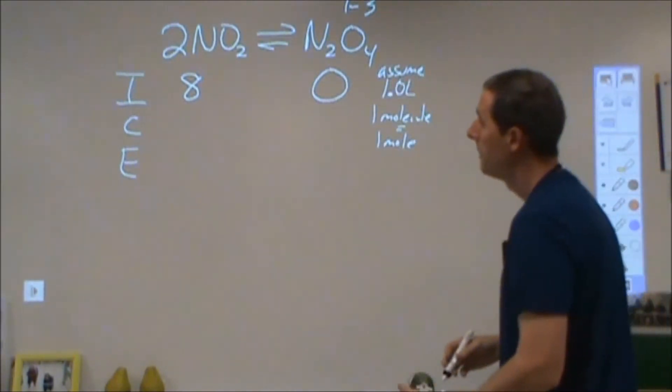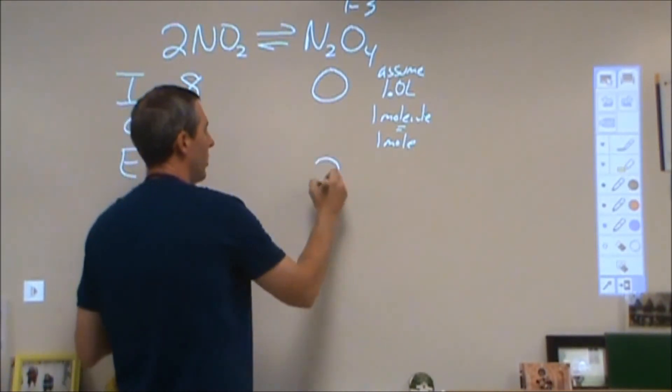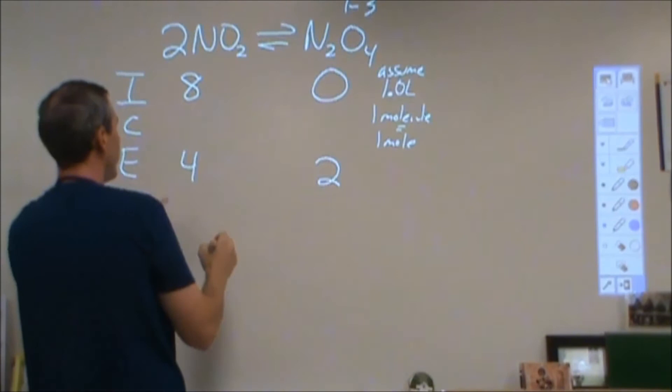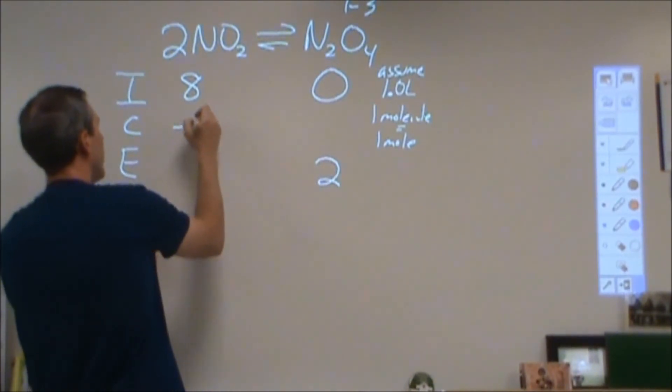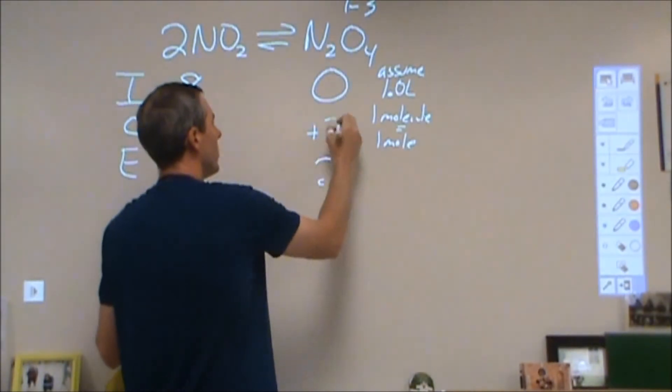At equilibrium, I had two of these in one liter, so that's two molar. And at equilibrium, I had four of these. Now, to get from eight to four, I lost four in molarity. To get from zero to two, I gained two in molarity.